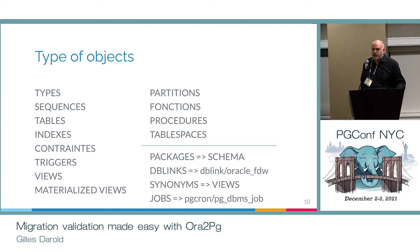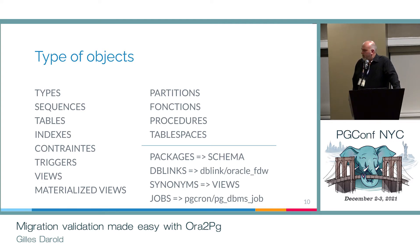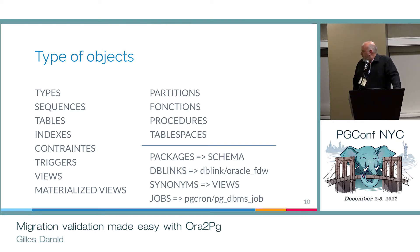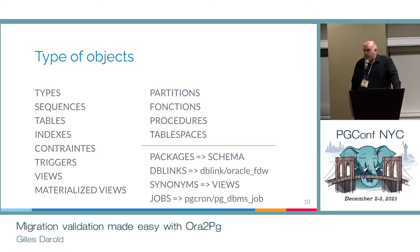There is also another part which is jobs. There is no such object in Postgres. So there are some extensions that allow creating jobs like PG-cron. There is also PG-agent. And now there is also a new extension called PG-DBMS job, which is equivalent to the DBMS job module, which allows running asynchronous jobs and scheduling jobs just like the Oracle module.